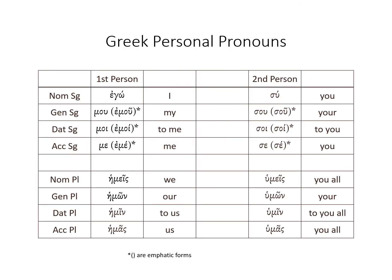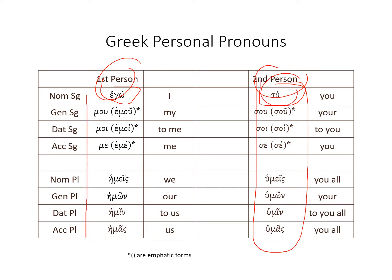When we think about the first and second person personal pronouns, first person and second person — ἐγώ and σύ are your lexical forms. So any of these words, when you parse — μου, μοι, με, ἡμεῖς, ἡμῶν, ἡμῖν, ἡμᾶς — all the way up, these all come from ἐγώ. First person is I, second person is you.